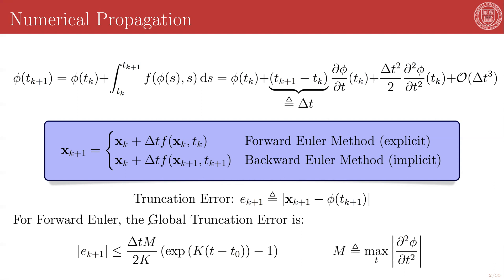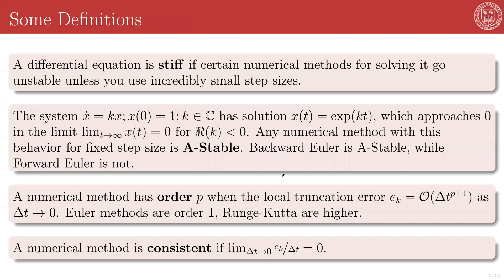The Forward Euler method can be unstable, especially for stiff equations. What is a stiff equation? Well, a stiff equation is one where your numerical integrator runs into problems, which I know sounds maddeningly circular, but that is literally the best way to define it. So formally, a differential equation is called stiff if certain numerical methods, such as the Forward Euler method, for solving it go unstable unless you use incredibly small step sizes.